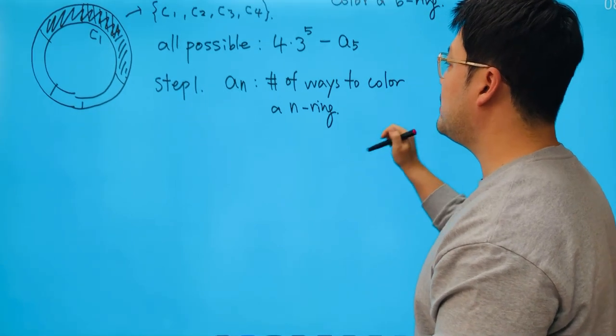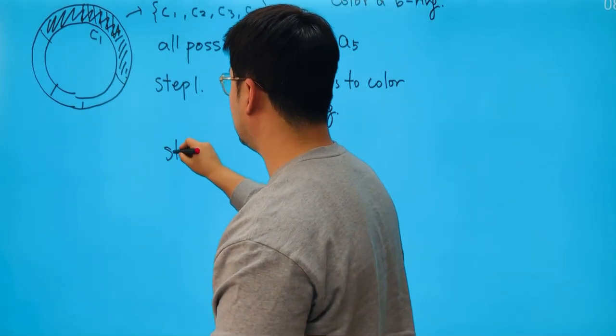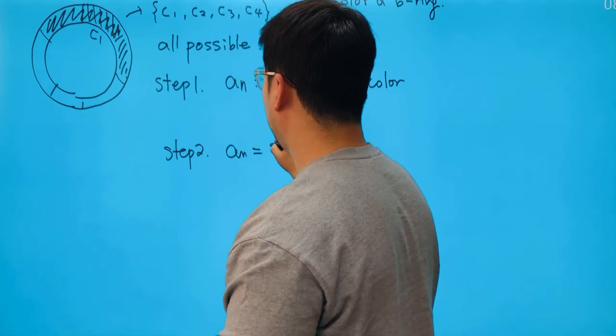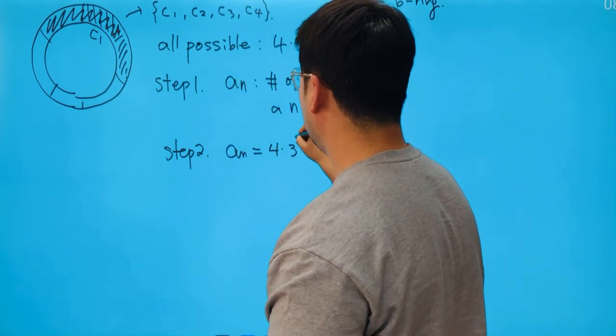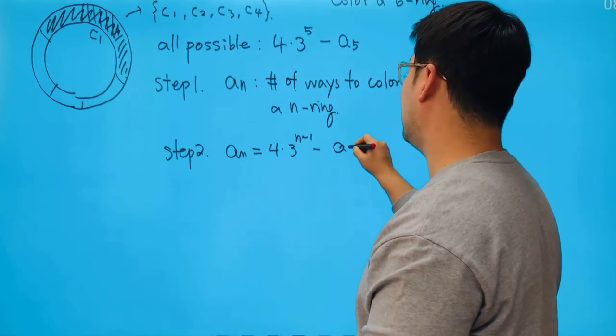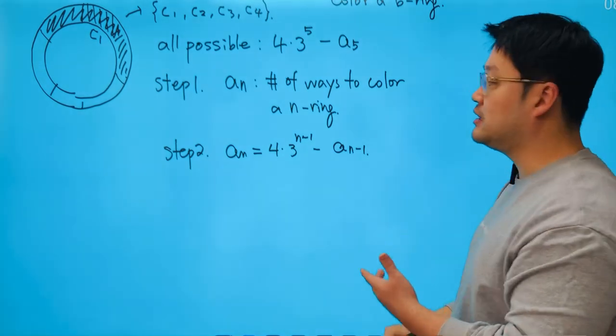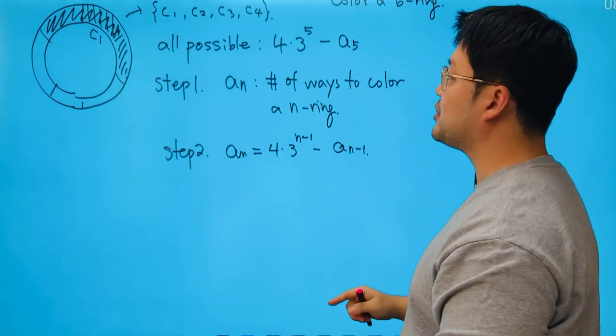And in other words, step number two: in this possible case I would say it's just going to be something like A_n will be 4 times 3 to the power of n minus 1 minus A_(n-1). We can set up a very specific state for this one and that's going to be the recursion.